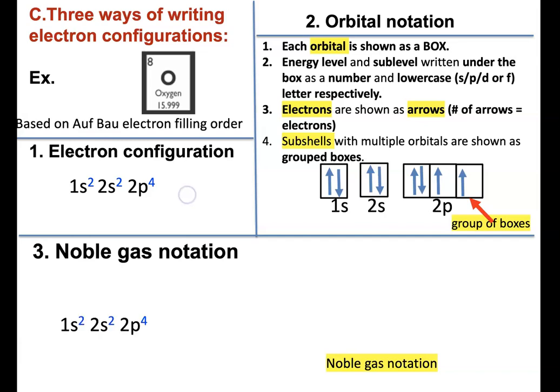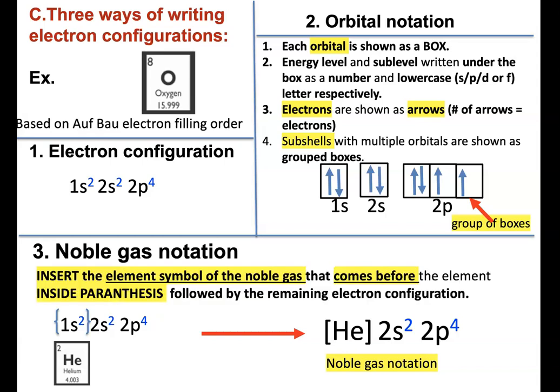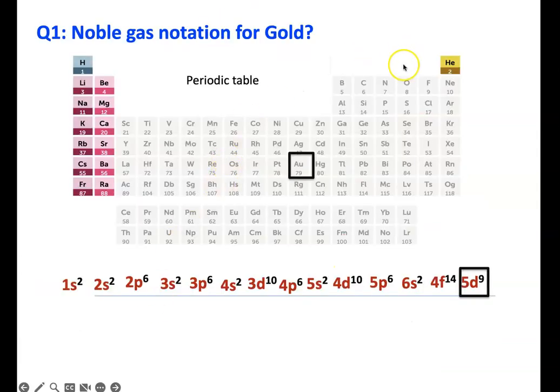Noble gas notation is much simpler. You are going to look at the nearest noble gas to this element. That would be helium. You're going to replace this section with helium and write the remaining electron configuration after. So, 1s2 2s2 2p4 became helium, parenthesis, 2s2 2p4. You always look at the noble gas that comes before the element.